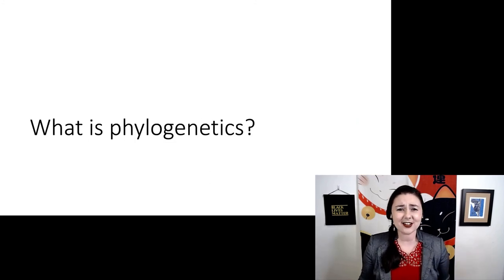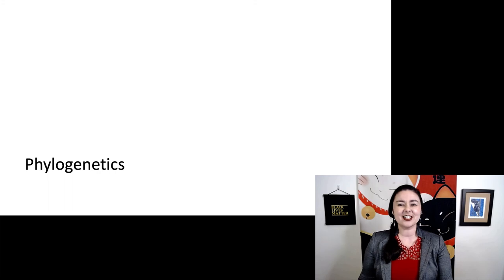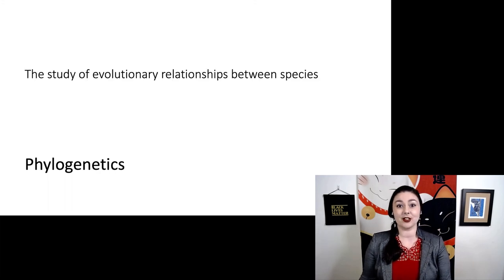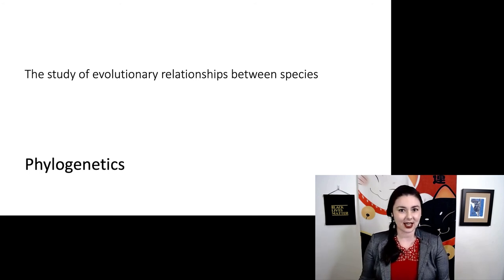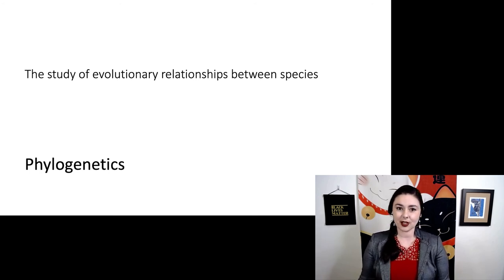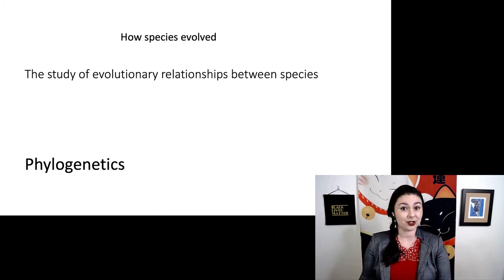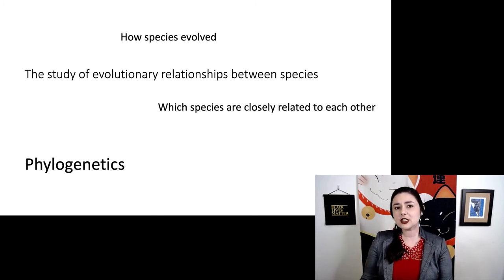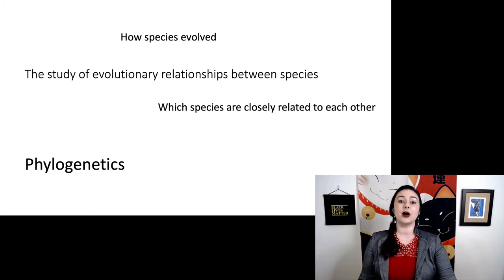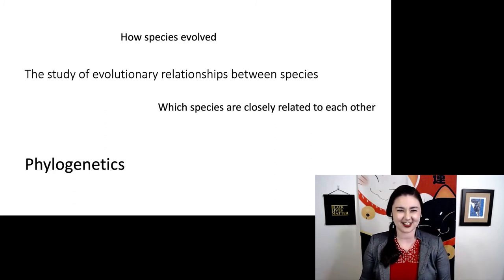What is phylogenetics in the first place? The field of phylogenetics is the study of evolutionary relationships between species. Think of genealogy, except now we're looking on a really big scale — instead of different people in your family, we're trying to figure out how different species are related. Phylogenetics is all about first understanding the pattern of evolution, and then it allows us to infer the process of evolution.